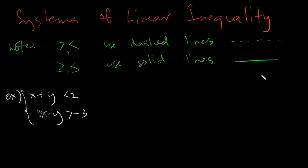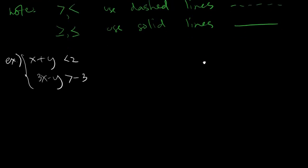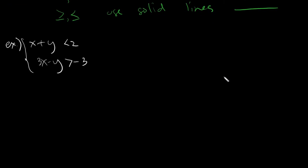We will have x plus y is less than 2, and 3x minus y is greater than negative 3. So in this case, this solution that we will be doing today would be related to solving linear inequalities, wherein we will graph the given and shade some parts. In line with this topic — systems — we will graph two inequalities on a single Cartesian plane, meaning we will have two shaded parts and two lines as well.